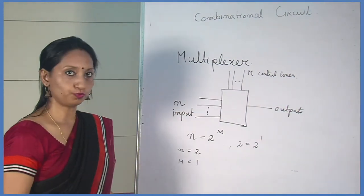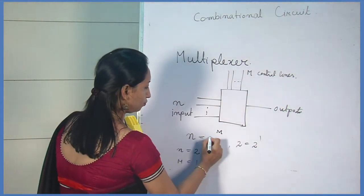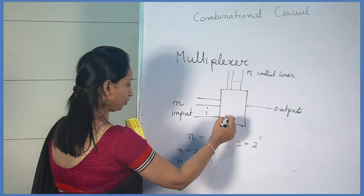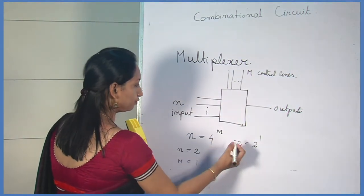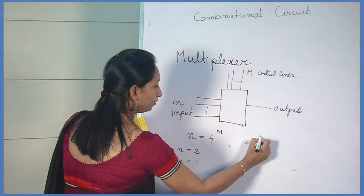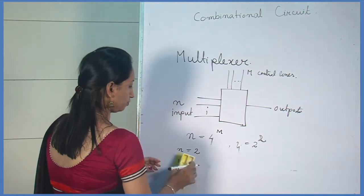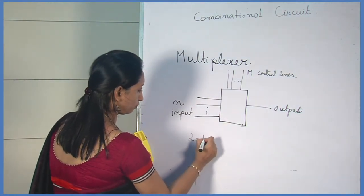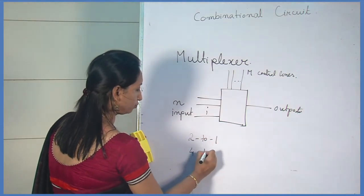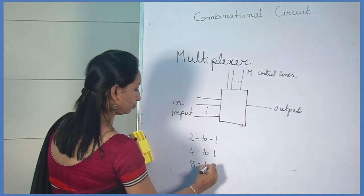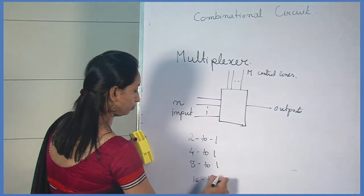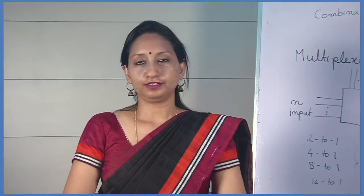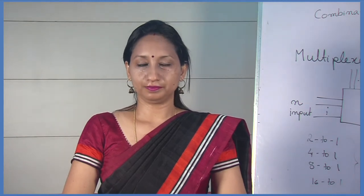That means, if the number of input lines is 2, then the number of control lines m will be 1, because 2 equals 2 to the power 1. This control line, or selector line, will be 1 when input is 2. If input is 4, then the number of control lines will be 2, because 2 to the power 2 equals 4. Examples of multiplexers are 2-to-1, 4-to-1, 8-to-1, or 16-to-1 multiplexers. The output is always 1, and the selector inputs determine the output.